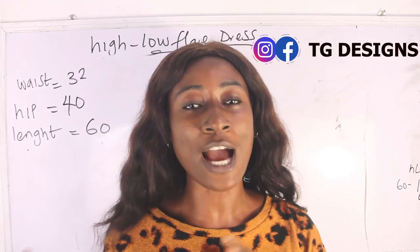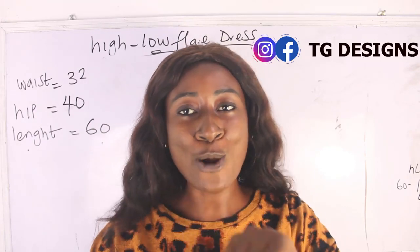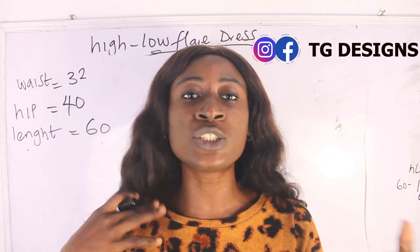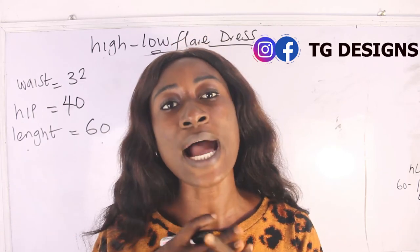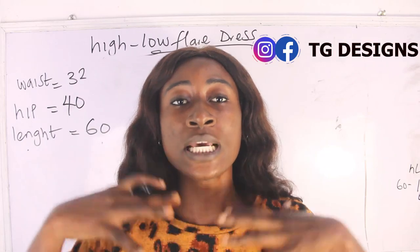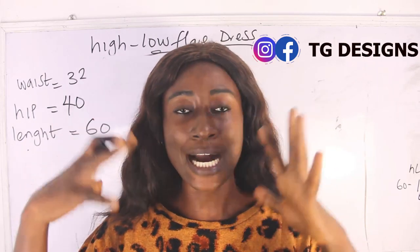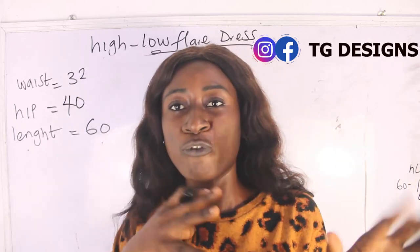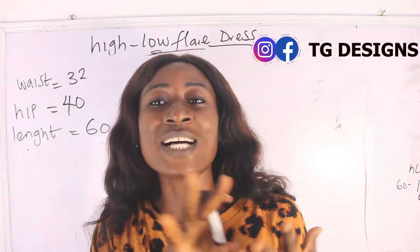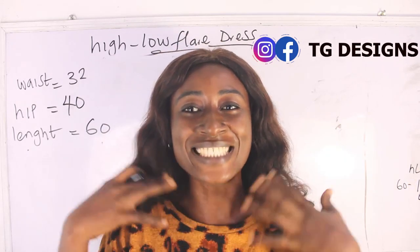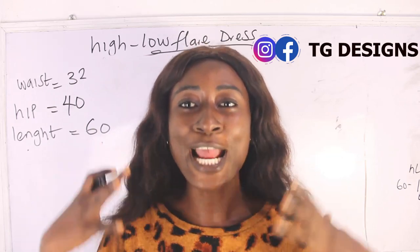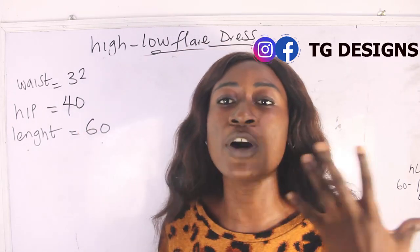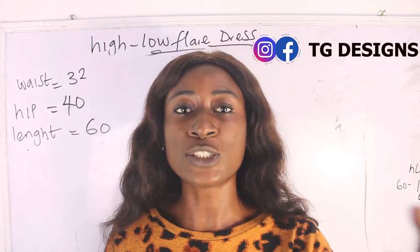The first thing is: what do you understand by ilo? Ilo simply means that your front is usually shorter than your back, and for your back block you have a longer length. So what are the basic measurements required in order to achieve your ilo flay dress? You need your waist measurement, hip, and your length.